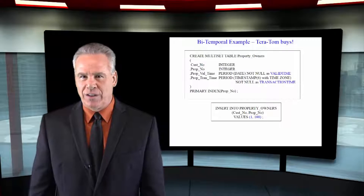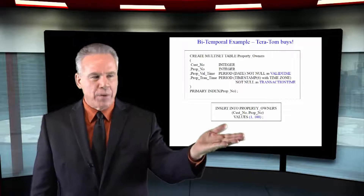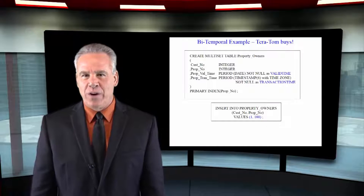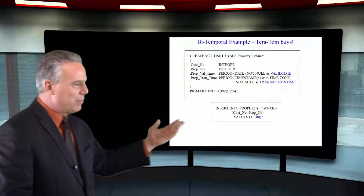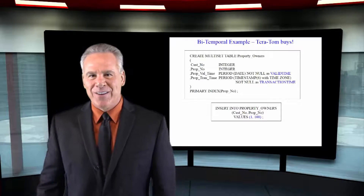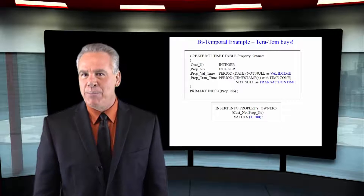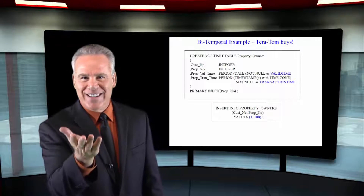On January 1st, in the property owners table, Tara Tom is recorded as buying beachfront property. He's customer number one, and he just bought property 100. Let's take a look at the SQL insert into property owners — we have customer number and property number, with values: customer one, Tara Tom, property 100. That's going to be recorded in our bi-temporal table.